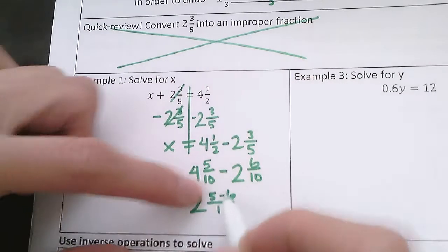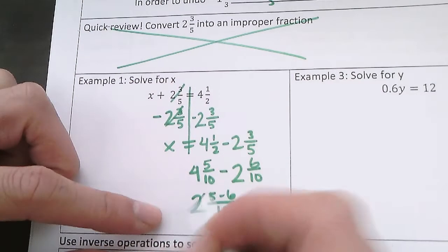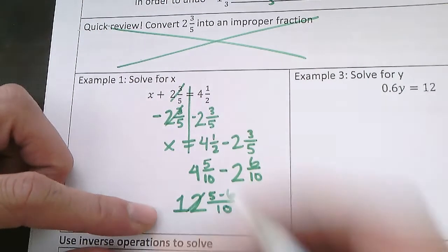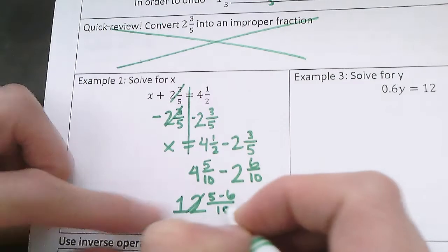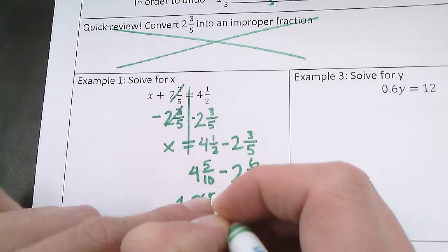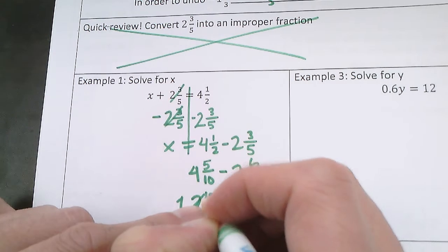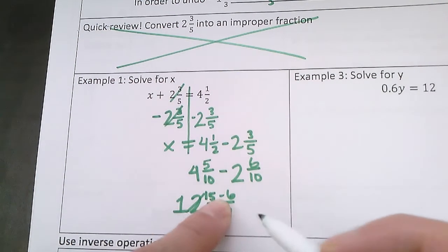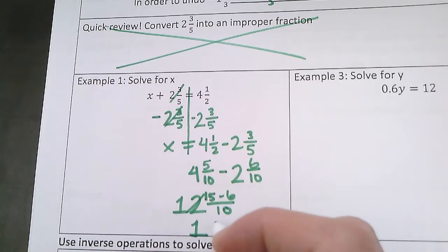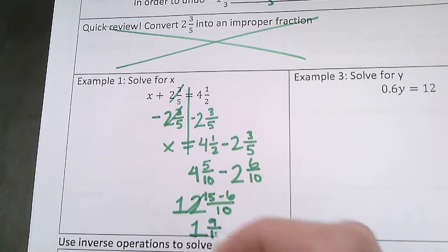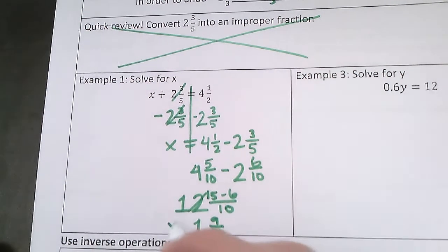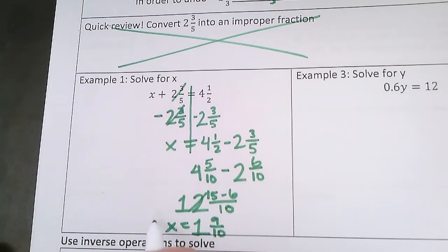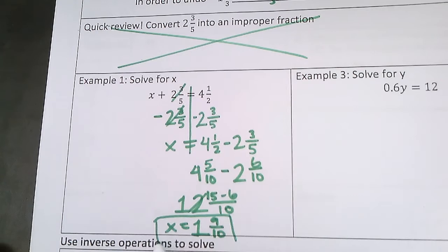Now 5 minus 6, I have to borrow from the whole number, so I'd have a 1 here. And then I can add another 10 to my 5, so I'd get 15. And then 15 minus 6 is 9. So 1 and 9 over 10. So x equals 1 and 9 tenths.